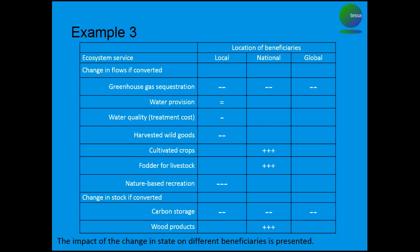And then finally, a very simple table showing the idea of looking at different groups of beneficiaries — the ecosystem services assessed and who benefits from those, broken down simply into local, national, and global, with negative signs meaning they lose out, equals signs meaning no change, and positive symbols meaning they benefit. From this you can see that national beneficiaries have a better deal if you convert the forest to agriculture, but looking at all the services as a whole, local and global beneficiaries lose out.